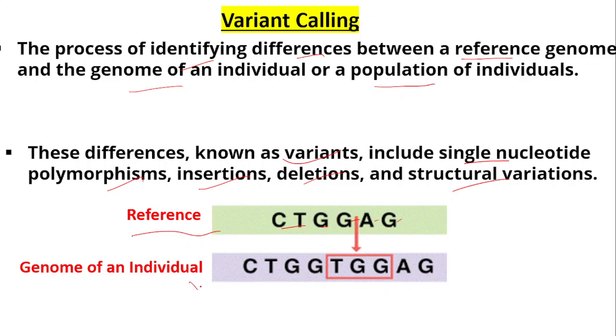The reference has one, two, three, four, five, and six nucleotides. The sequence that we obtain after next generation sequencing for an individual here has three more nucleotide bases than the reference sequence, and these three nucleotide bases have been inserted in between G and A.